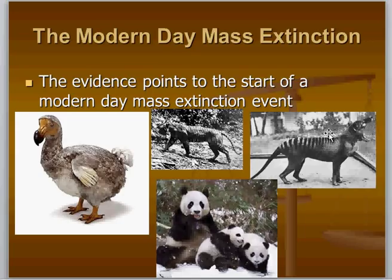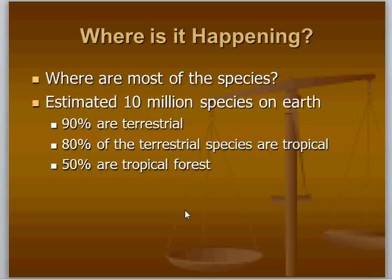Where is this mass extinction event happening now? In the past it has taken place in temperate ecosystems. However, those temperate ecosystems tend to hold much less species than the tropical ecosystems. By and large, large amounts of temperate species are still extant, although some were lost.